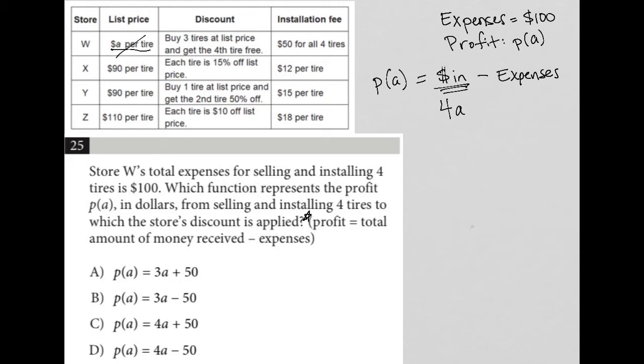Then when I get to the discount side, it says if you buy three tires at list price you get the fourth tire free. That tells me they're not actually getting four times A, they're just getting three times A, because that fourth tire is free. You're not paying for that fourth tire. So that takes care of the discount.